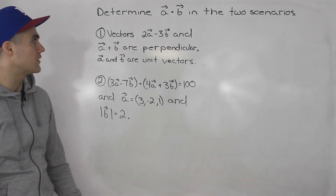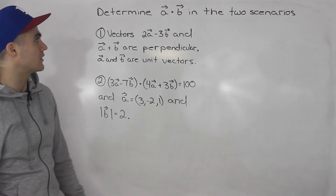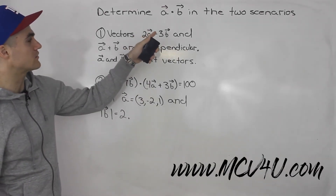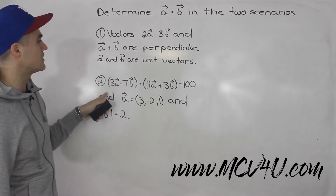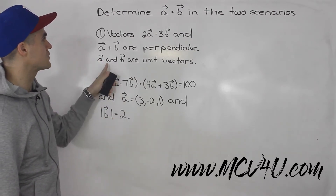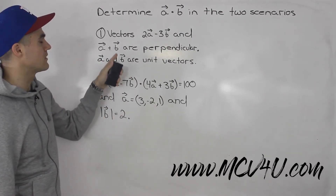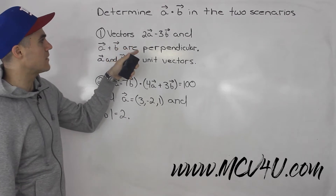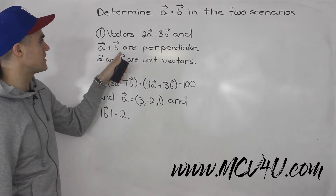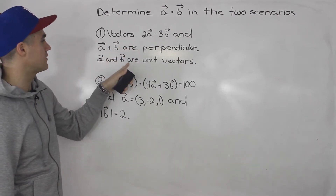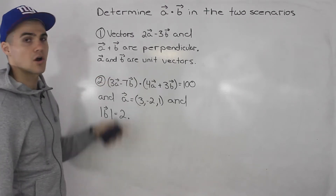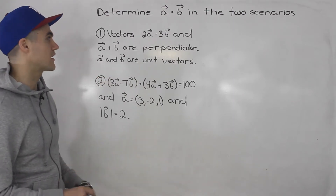Welcome back everybody. Moving on with the dot product — we have to determine the dot product of a and b in both of these scenarios. Starting with the first scenario, vectors 2a minus 3b and a plus b are perpendicular, and vectors a and b themselves are unit vectors.